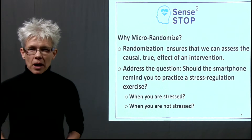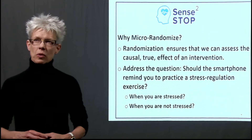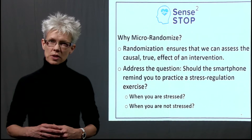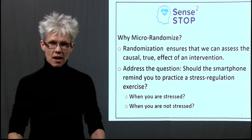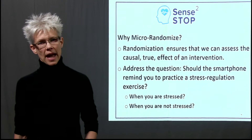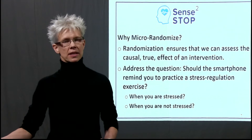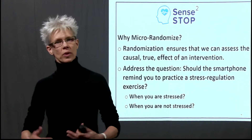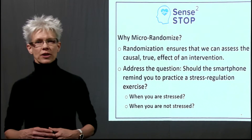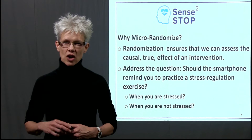Why are we micro-randomizing? One might imagine using a large observational dataset to look at when people access the stress management exercises on their phone — comparing timestamps when they do versus don't access the app — and then comparing their stress level over the succeeding hour. This would be a very natural thing to do. But what randomization gives us is the ability to estimate a causal effect.